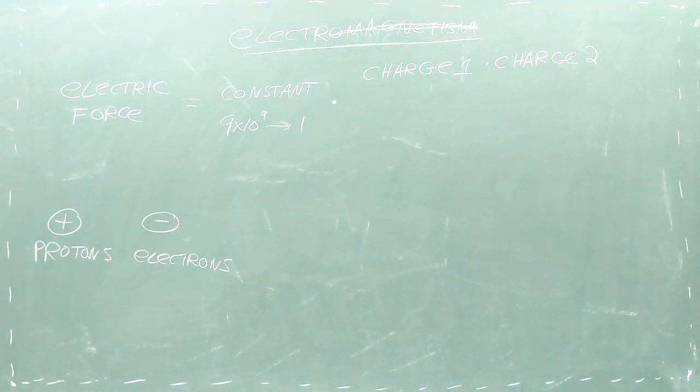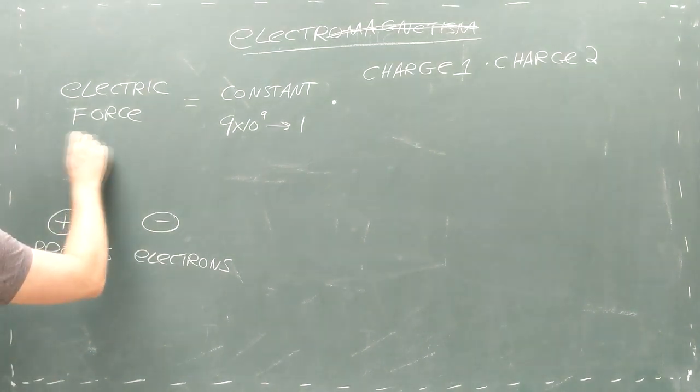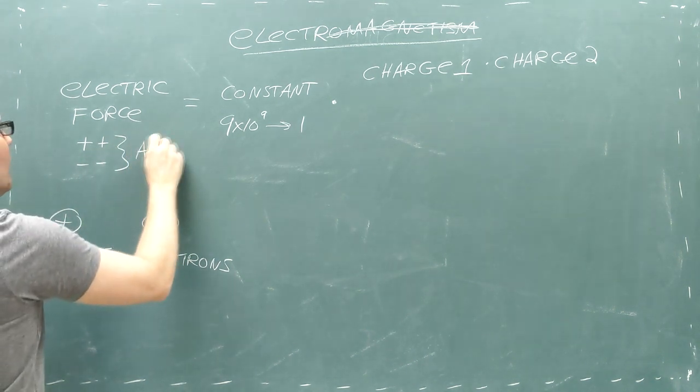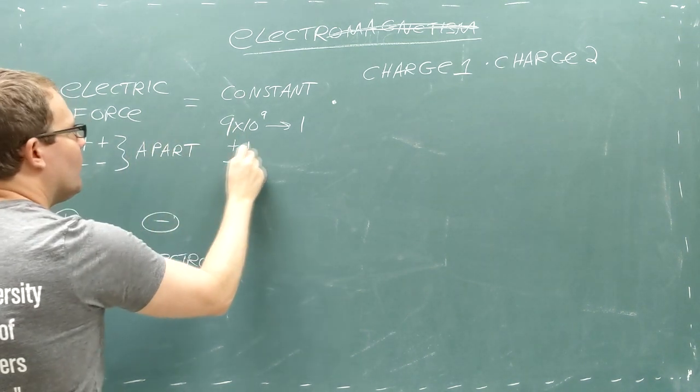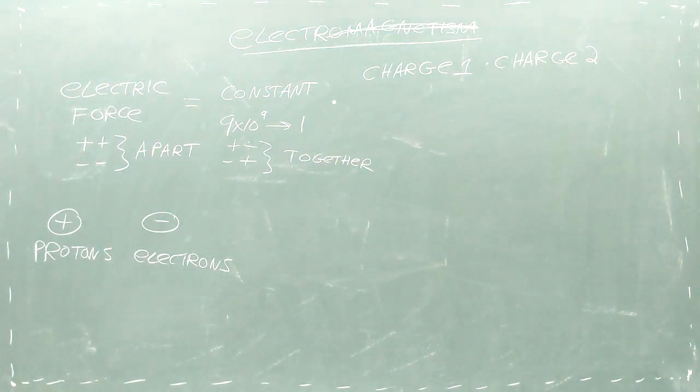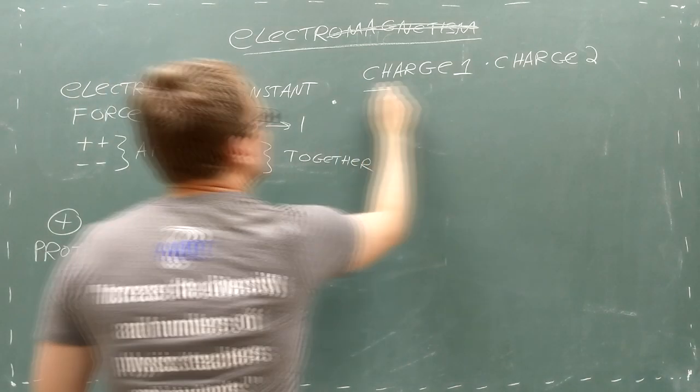Next, there's the charge of the object exerting the force. We'll label this object with a 2. Because these charge values are being multiplied, if the two charge values have the same sign, the force will push the objects apart. But if the charge values have opposite signs, then the force will pull the two objects together.